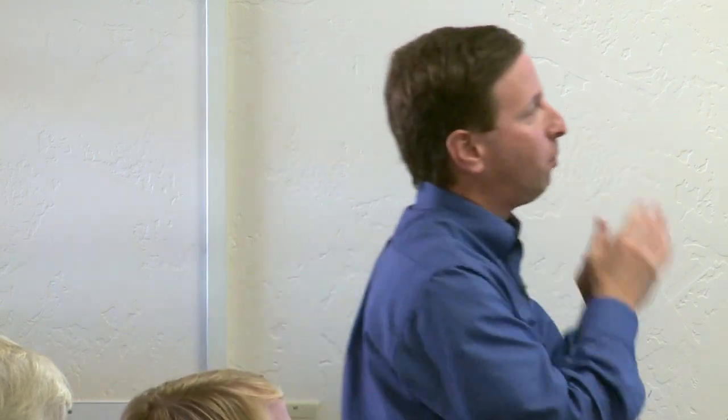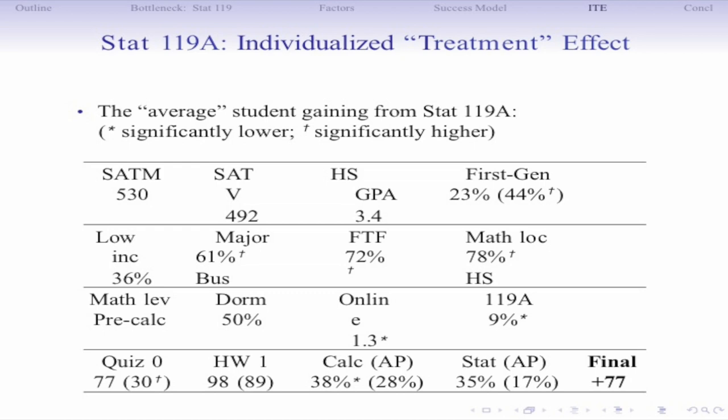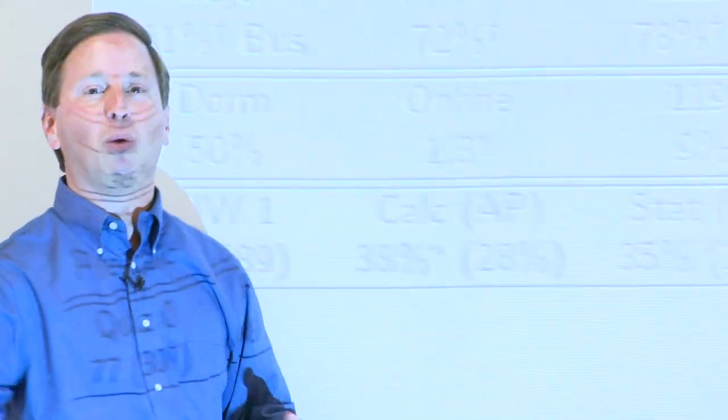Rather than showing individual treatment effects for every student, here's an average result: the student who gets the biggest benefit from 119A has a weaker educational background — lower SAT scores, okay GPA, more likely first-generation, more likely a business major, transfer student, most recent math in high school, less likely to have taken calculus. Most alarmingly, a significantly lower percentage of these high-benefit students actually enrolled in the recitation section. But we predict they would perform significantly better on the final exam if they did.